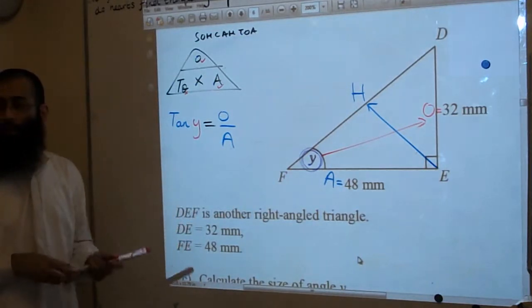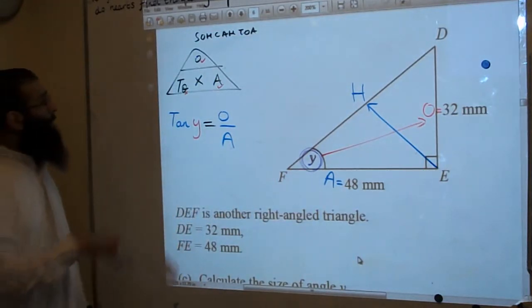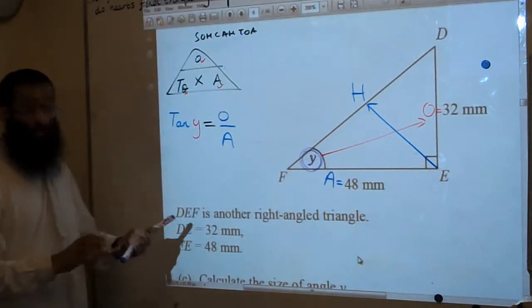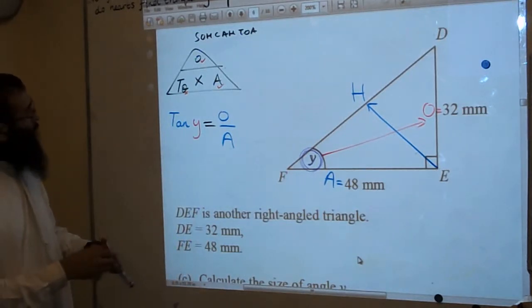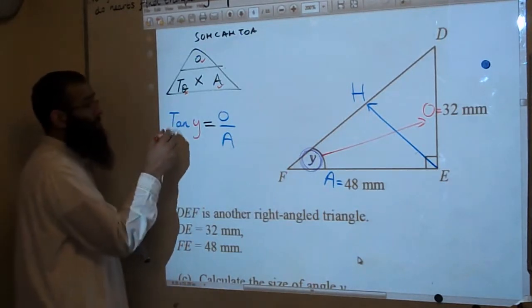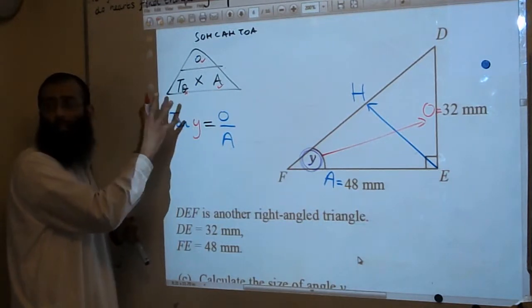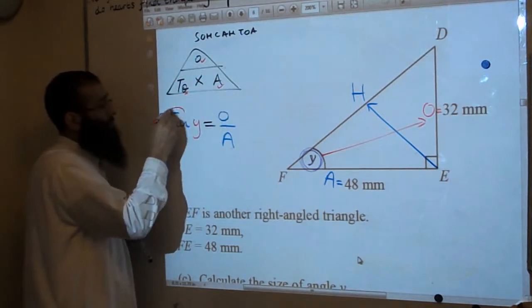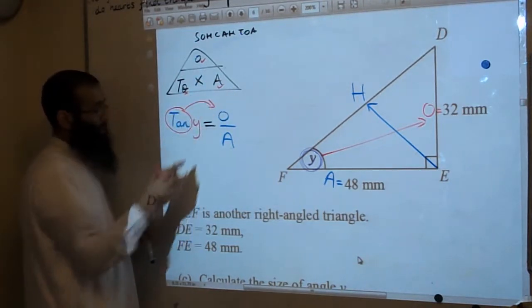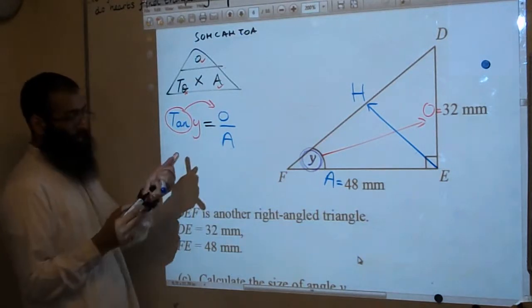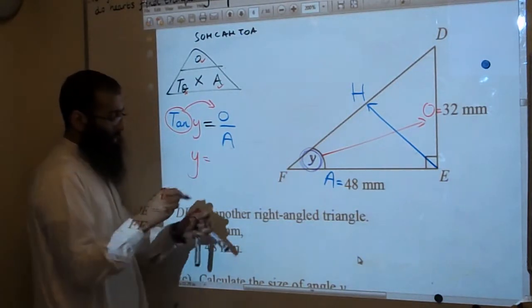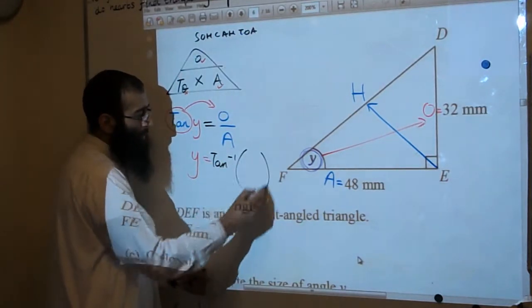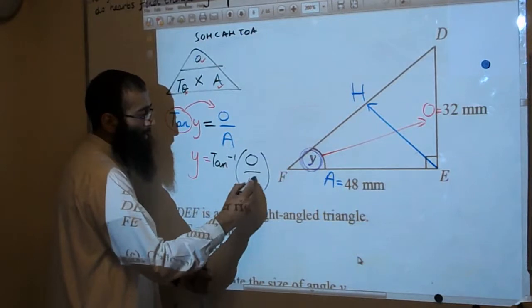That's what the tan of Y is. Now, in this particular question, do I want to work out the tan of Y, or do we want to work out just Y on its own? We need to work out the Y on its own. Y on its own. So what do we do with the tan in that case? So tan is acting on the Y, so we're going to take the tan from the left-hand side to the right-hand side, and do the opposite of tan. It's called inverse tan. Okay, so we have now Y is equal to tan to the minus 1 of O over A.